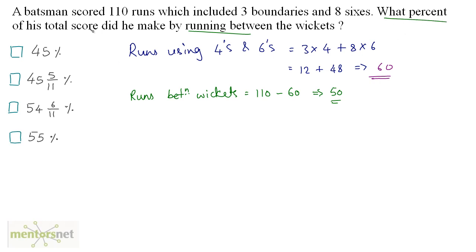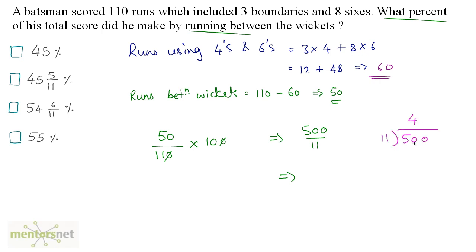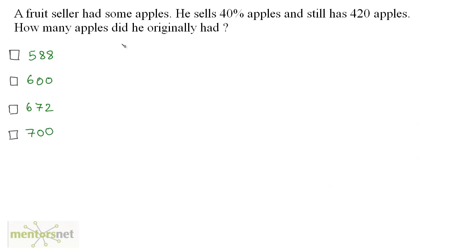We need the percentage of total score made by running between the wickets. So 50 out of 110 runs: 50/110 times 100 gives the percentage, which equals 500/11. Dividing, 11 fours are 44, remainder 6; 11 fives are 55, remainder 5 — giving 45 and 5/11 percent. The answer is option B.